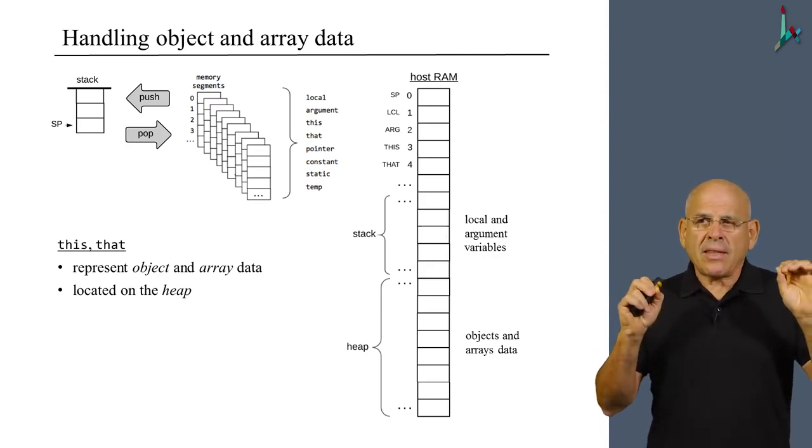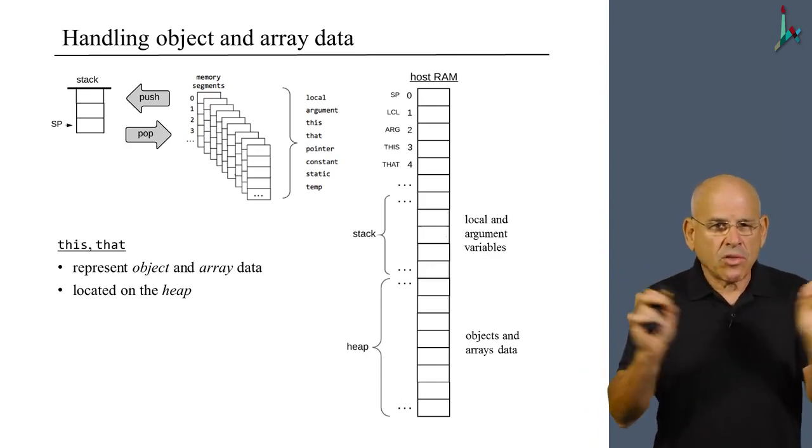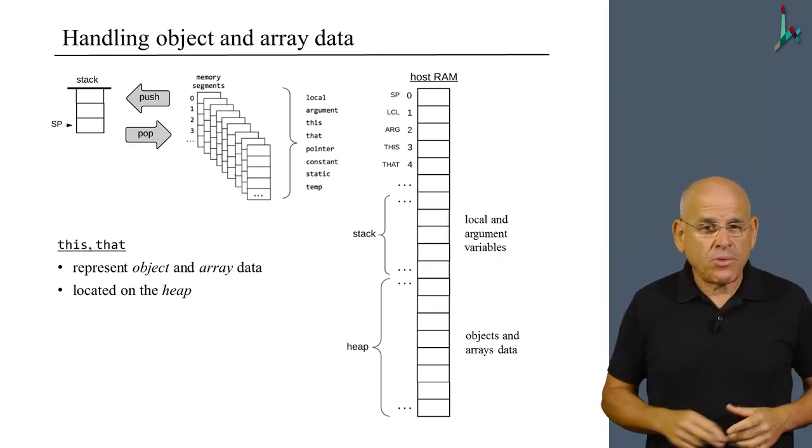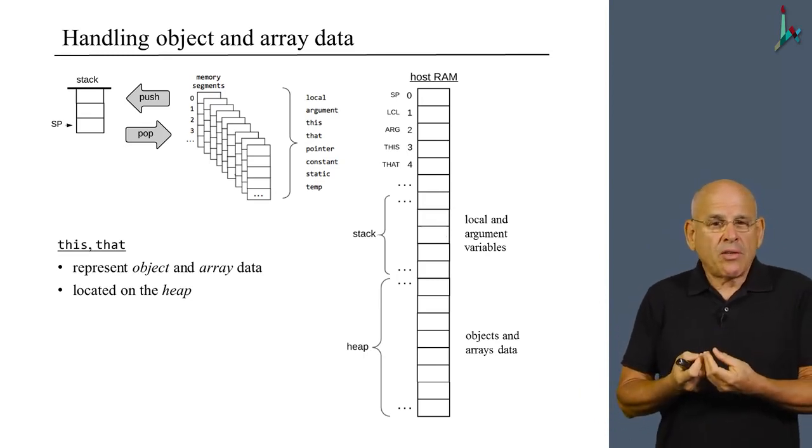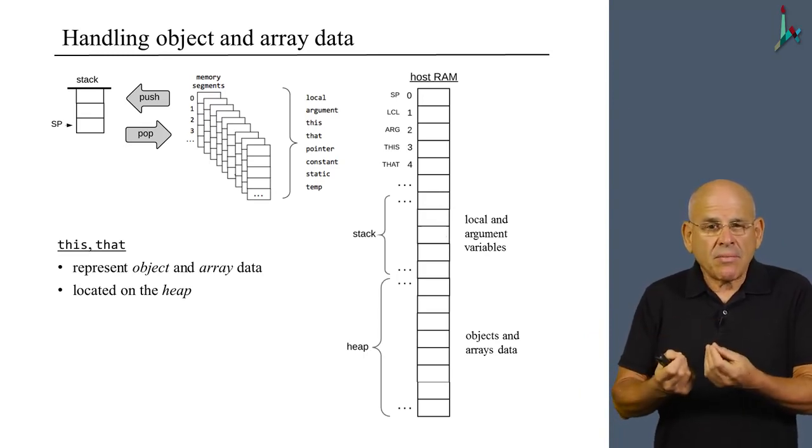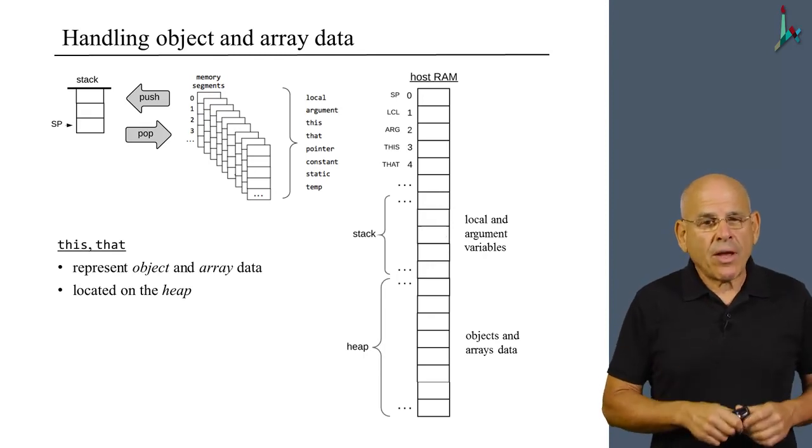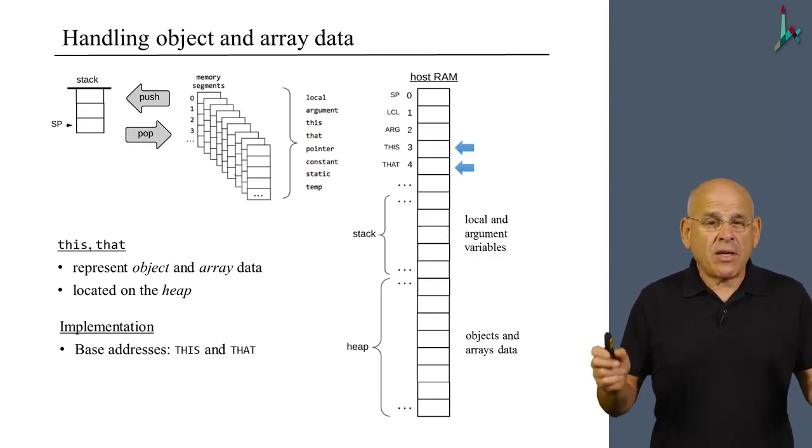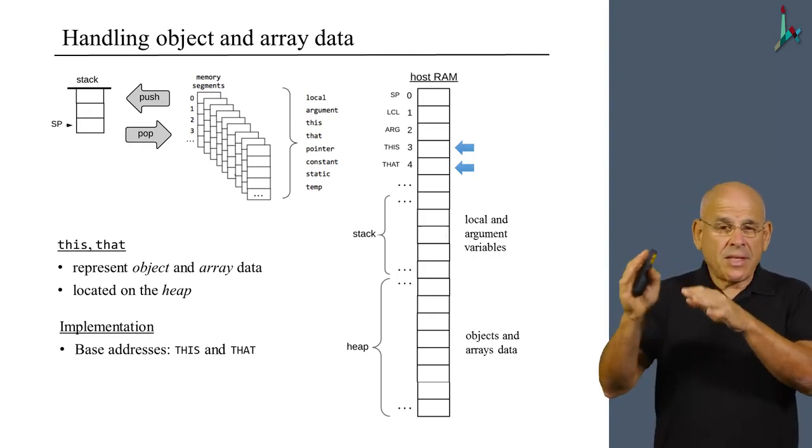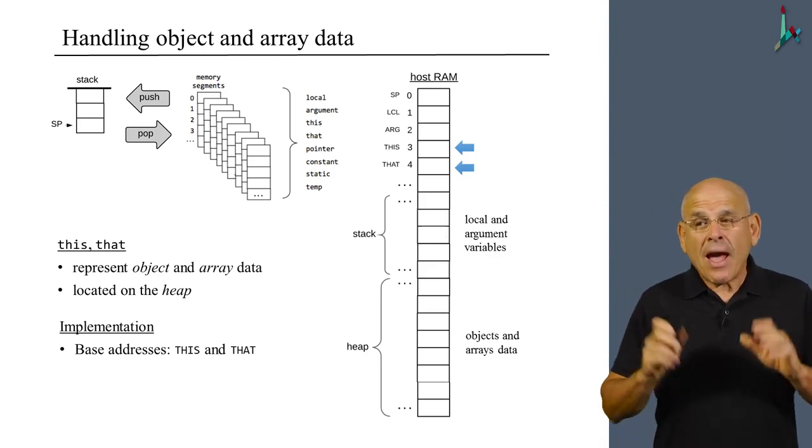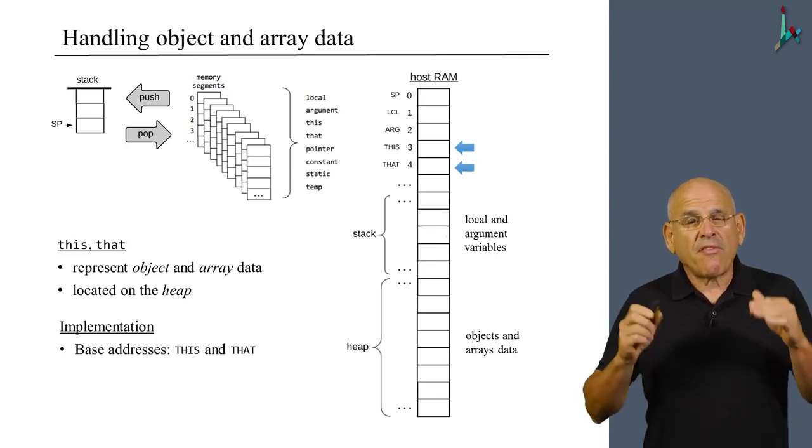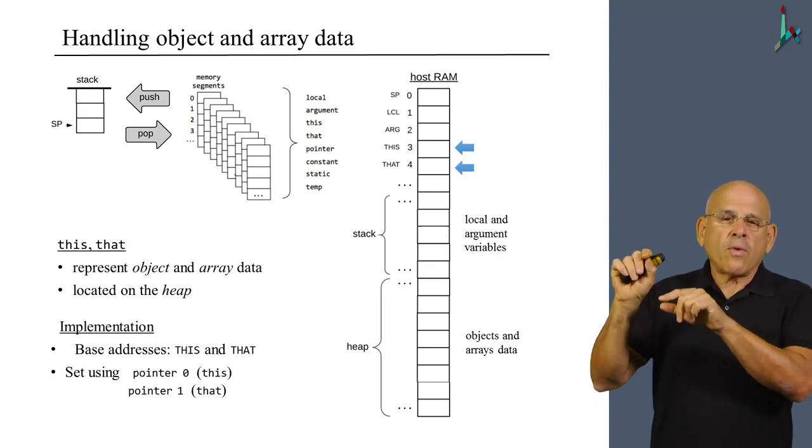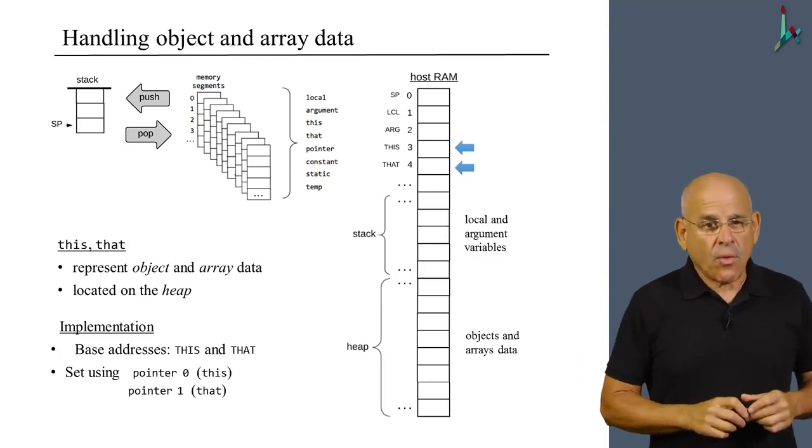As opposed to the local and the argument segment, which are singular—you have only one of each to worry about—here we may have many objects on the heap. Before we access an object using the this segment, we have to somehow tell the system, what do we mean when we say this? I mean, to which object are we actually referring? The implementation of this location is taken care of using the pointers this and that, just like we did with the local and argument. However, before we use the two segments this and that, we first have to use the pointer segment to tell the system where we want to align this and that on the RAM.